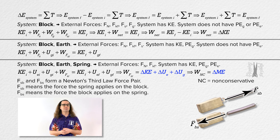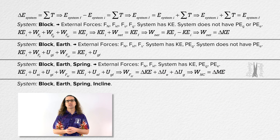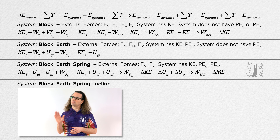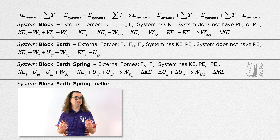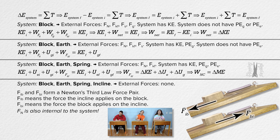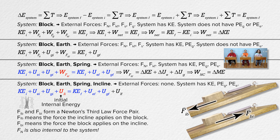Let's add one more object to the system — the incline. Now the system is the block, the Earth, the spring, and the incline. The force of friction is now internal to the system, because there is a force of friction acting from the surface on the block and an equal but opposite force of friction acting from the block on the surface — again a Newton's Third Law force pair and internal to the system. That means instead of work done by the force of friction on the system, the system now has initial and final internal energy. The equation for the block-Earth-spring-incline system is: kinetic energy initial plus elastic potential energy initial plus gravitational potential energy initial plus internal energy initial equals the sum of the final values for all of those types of energy.